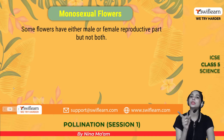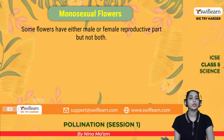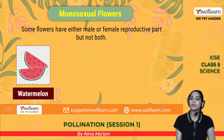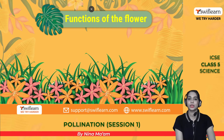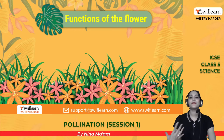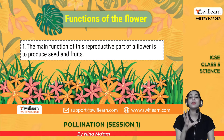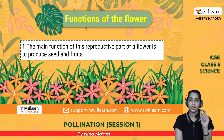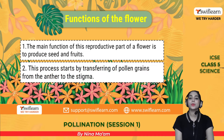Monosexual or unisexual flowers have either the male or female reproductive part but not both. Examples are watermelon, cucumber, and papaya. Now, what are the functions of the flower? The main function is reproduction: the flower has a reproductive part that produces seeds and fruits. It has an ovary and ovule — the ovary turns into the fruit and the ovule turns into the seed. This process starts by the transfer of pollen grains from the anther to the stigma.